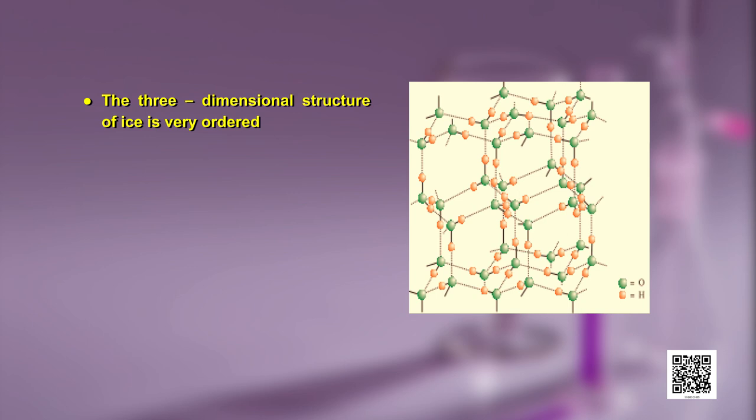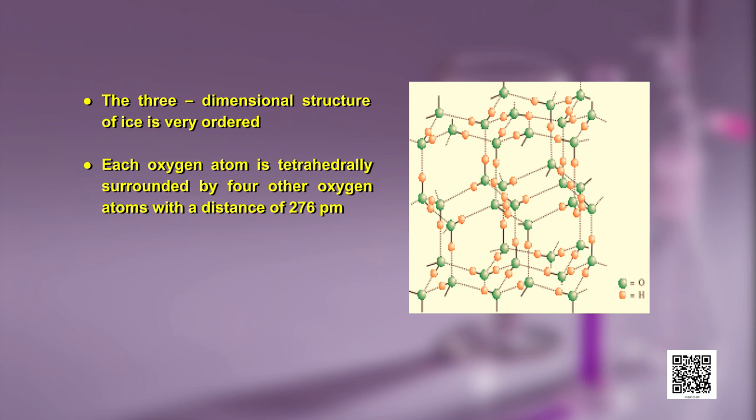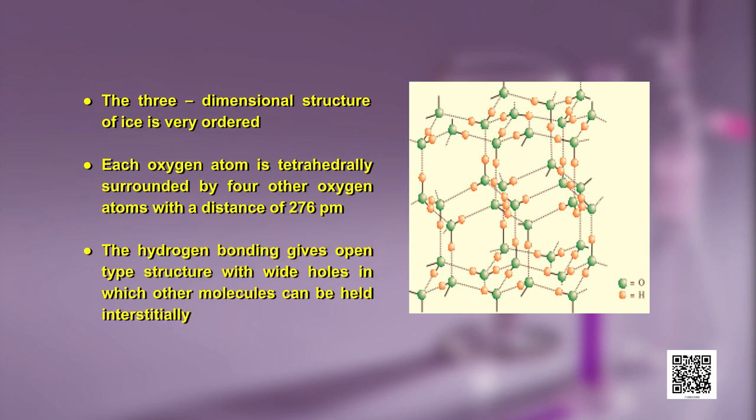At atmospheric pressure, ice crystallizes in hexagonal form, but at very low temperature it condenses in cubic form. The three-dimensional structure of ice is very ordered — each oxygen is tetrahedrally surrounded by 4 other oxygen atoms. The hydrogen bonding gives an open-type structure with wide holes in which other molecules can be held interstitially. We will now study the important chemical properties of water: its amphoteric nature, redox reactions, hydrolysis, and hydrate formation.